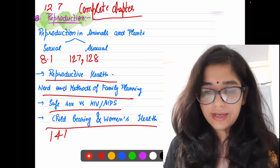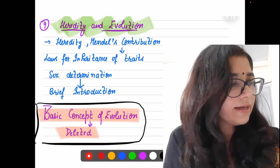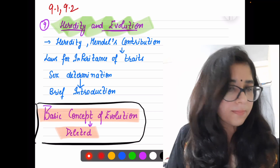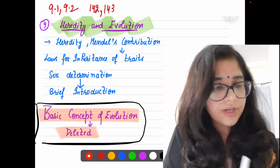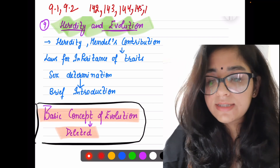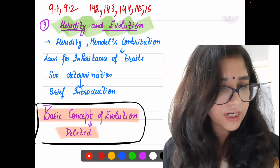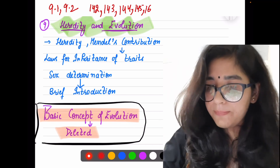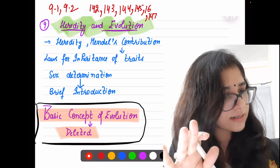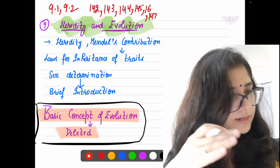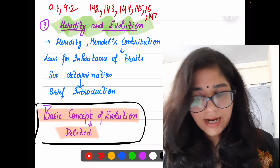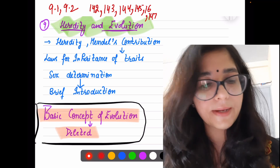Now move to Heredity — this is important. Chapter 9 Heredity and Evolution: topics 9.1 and 9.2, from page 142 to 146 — that is till Sex Determination. In-text questions are on page 147. Topics to tick: Accumulation of Variation, Heredity, How Do These Traits Get Expressed, Sex Determination, Inherited Traits, Rules for Inheritance of Traits, Mendel's Contribution — complete Heredity and Sex Determination will come in the exam.